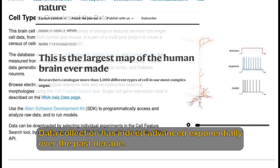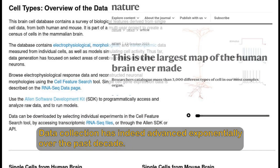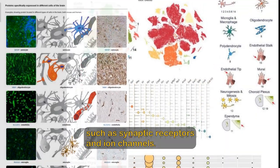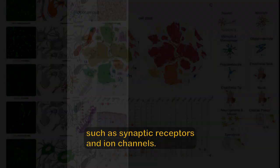Data collection has indeed advanced exponentially over the past decade. We can now identify and categorize numerous neural cell types and their components, such as synaptic receptors and ion channels.